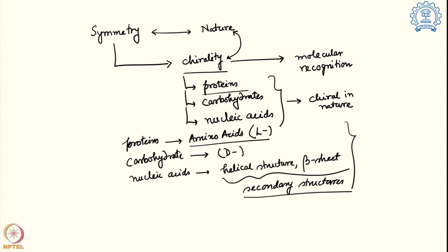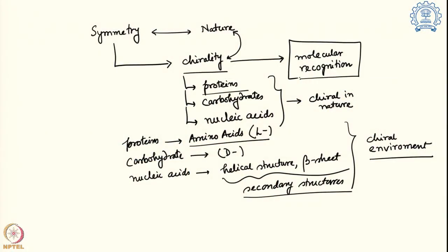When biological systems are interacting with other molecules, this chiral environment becomes the key. It determines which particular amino acid and which particular carbohydrate is going to interact and how it recognizes them. The molecular recognition and one of the important factors of that is this chiral environment, and that is why we are interested to know about symmetry and chirality.